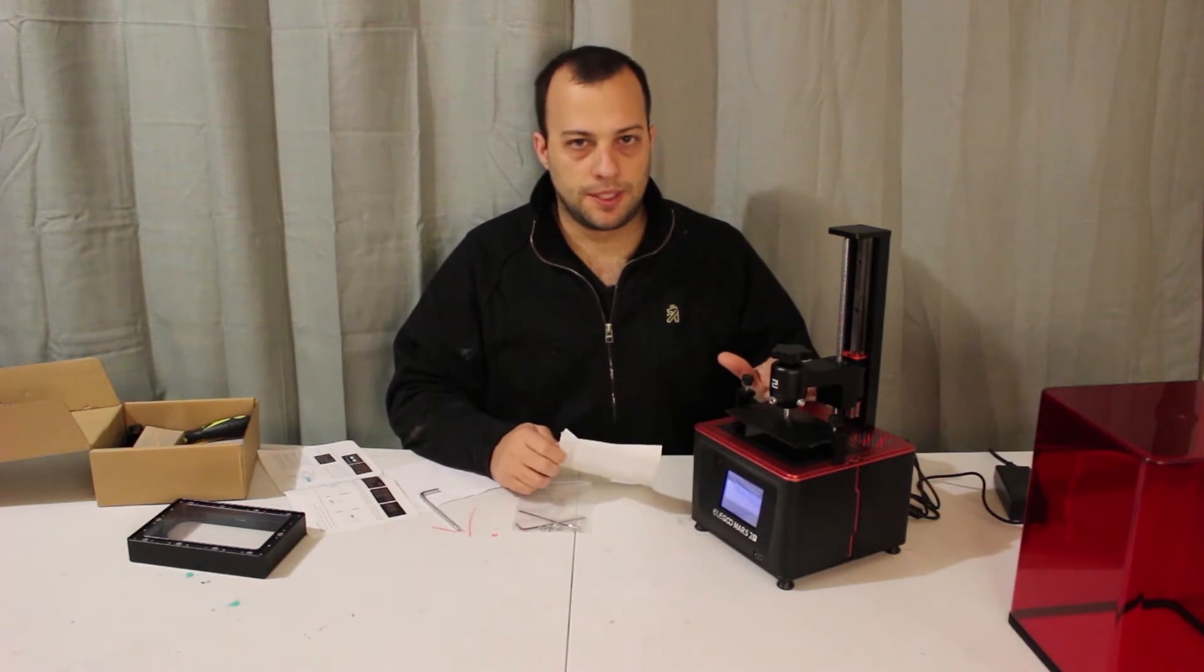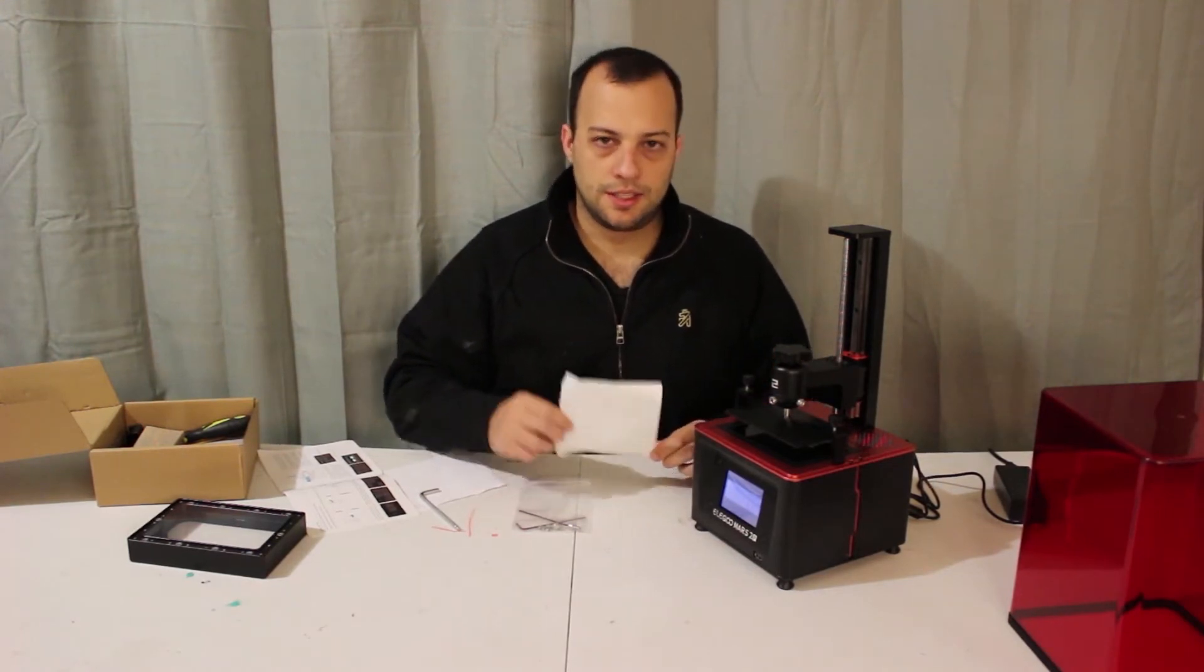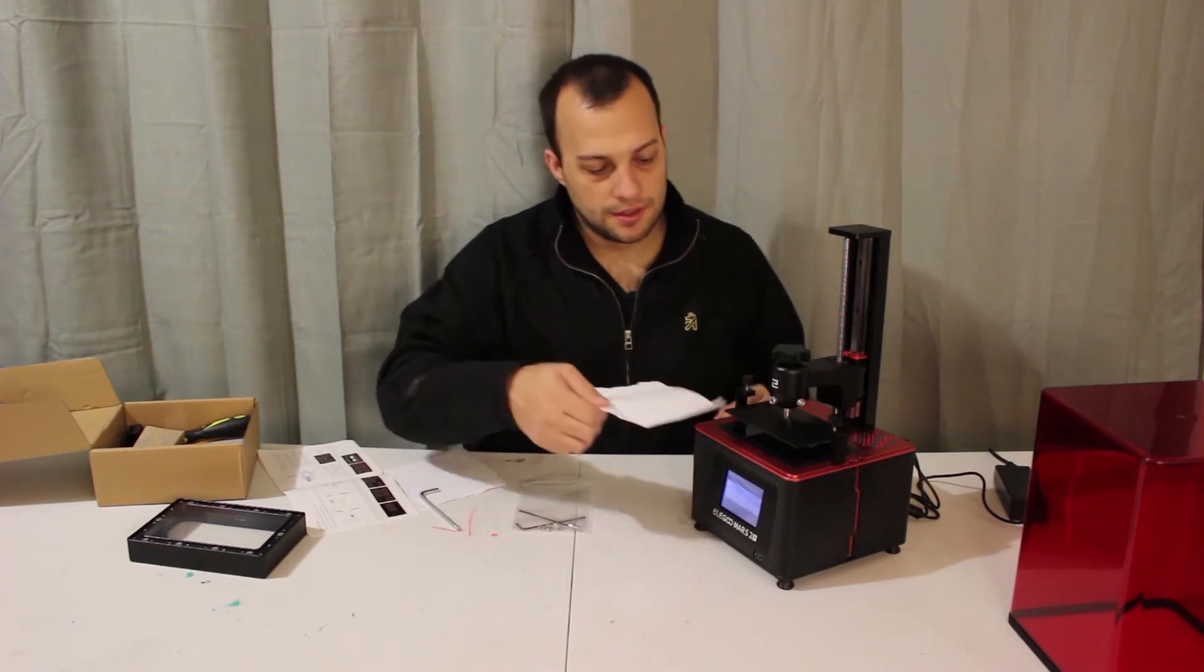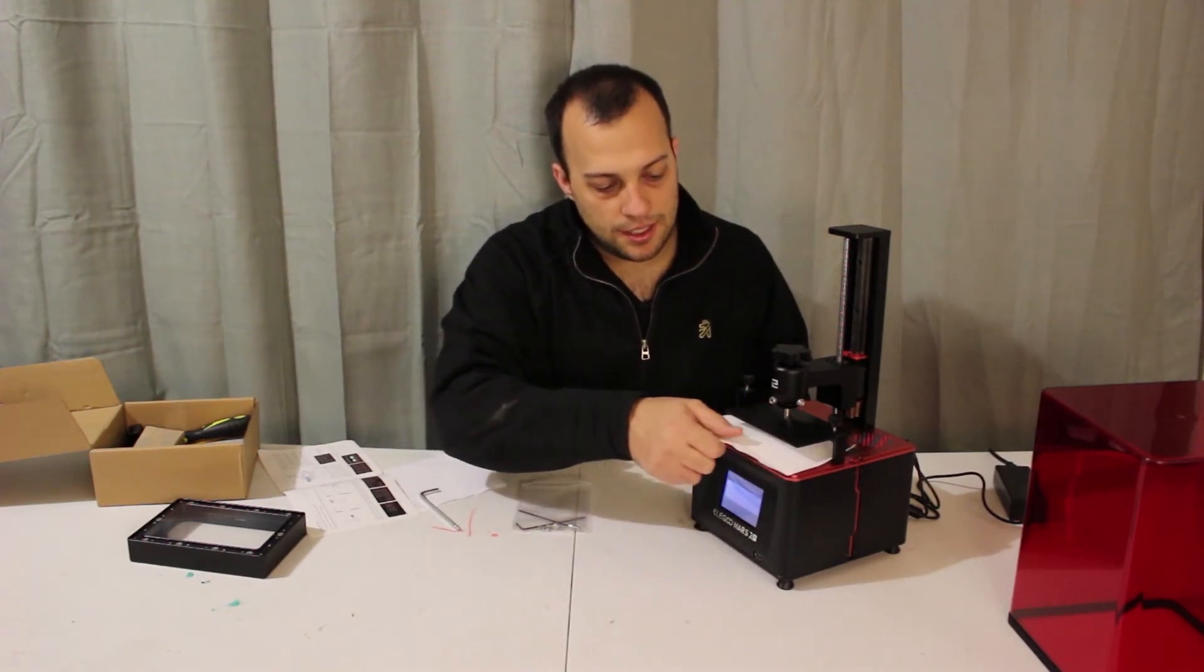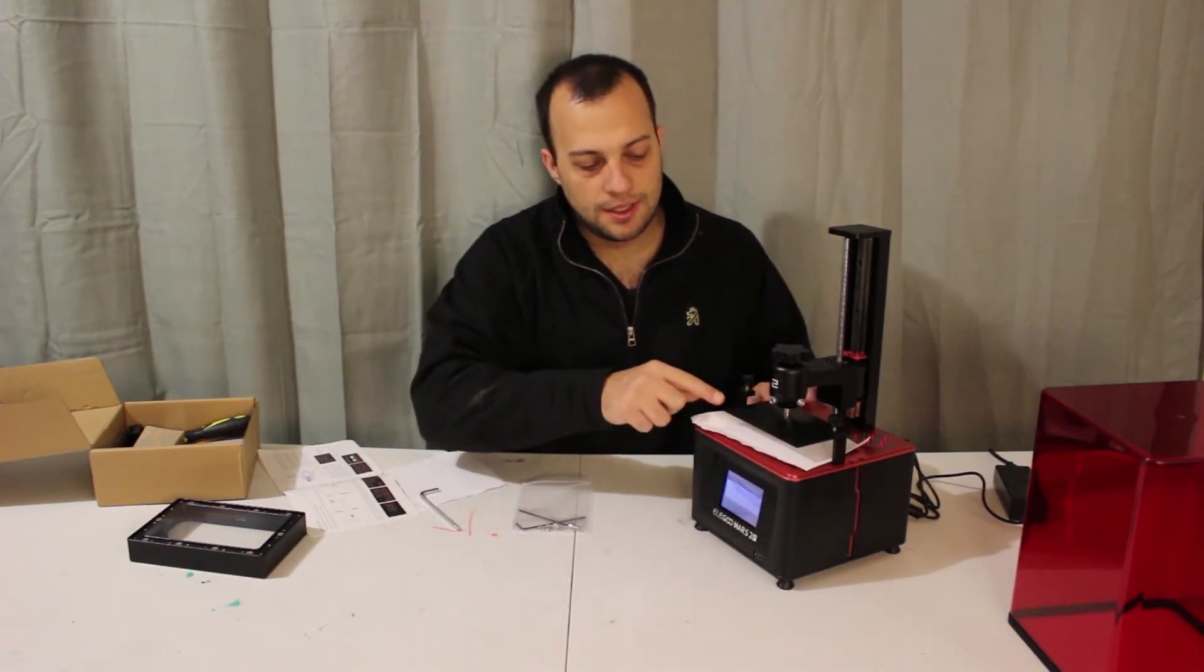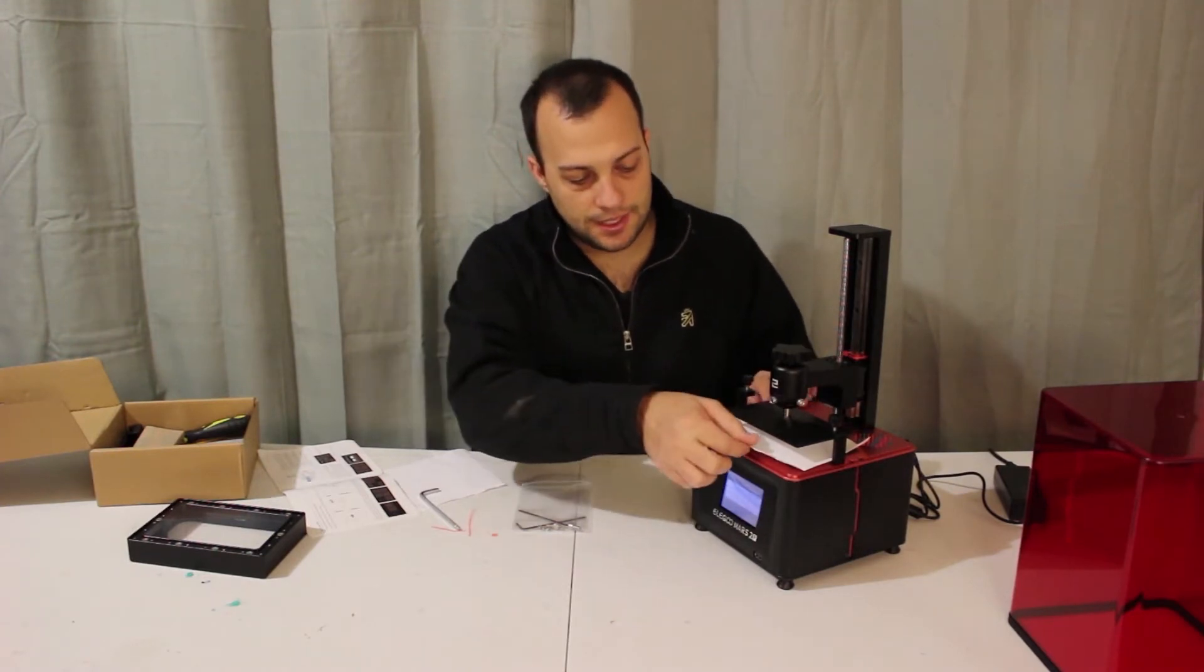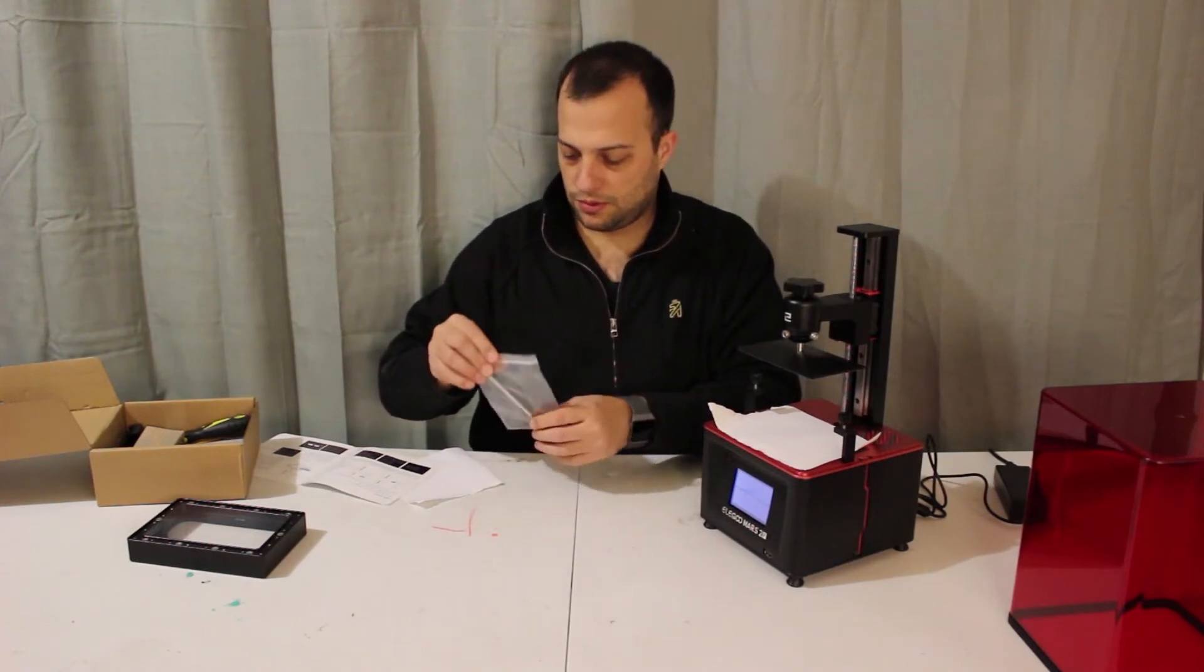We're going to go ahead and set the build plate, and to do that, you're going to need an A4 paper, basically a sheet of paper. We're going to go ahead and slide it underneath the build plate and the 2K LCD screen, like this. Now we're going to need some tools.